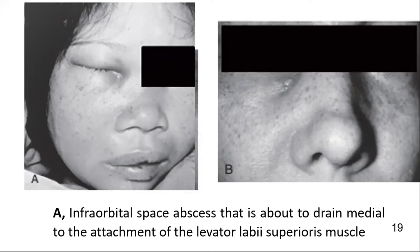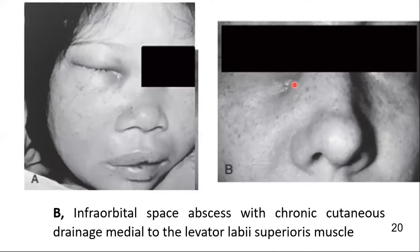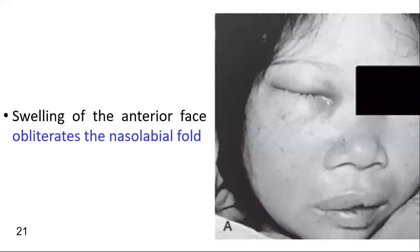This is the clinical picture showing an infraorbital abscess about to drain medial to the attachment of the levator labii superioris muscle. Here you can see an infraorbital space abscess with chronic cutaneous drainage medial to the levator labii superioris muscle. On clinical examination, when the canine space is infected, swelling of the inferior face obliterates the nasolabial fold — here you cannot see the nasolabial fold — whereas here you can appreciate it. This is diagnostic of canine space or infraorbital space infection.